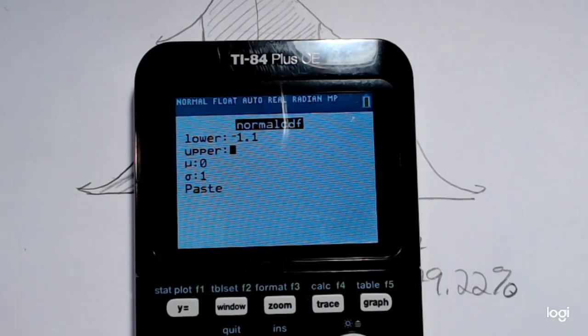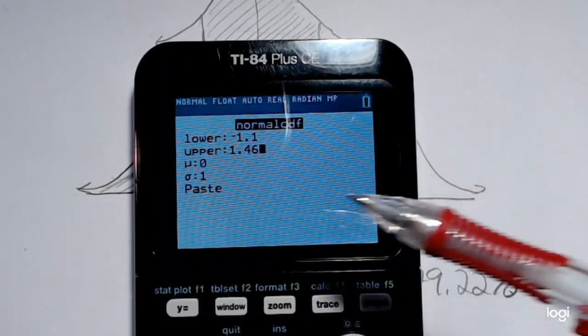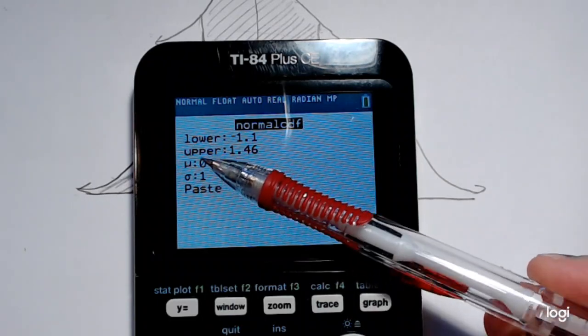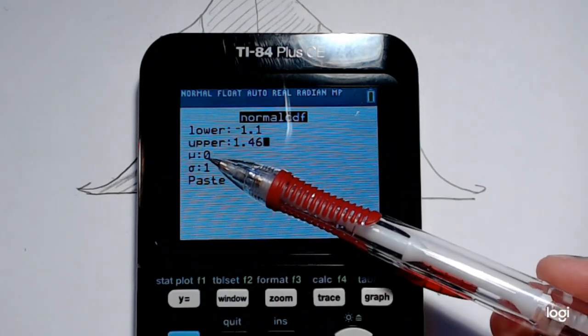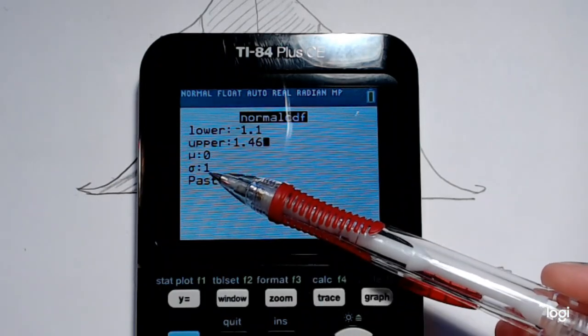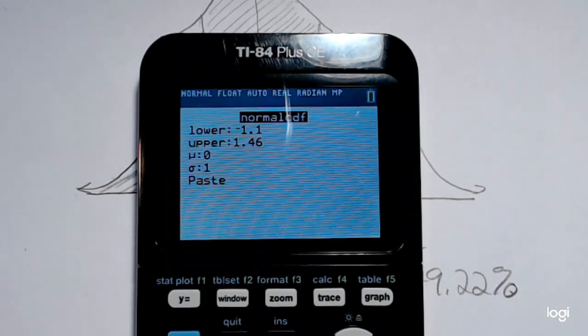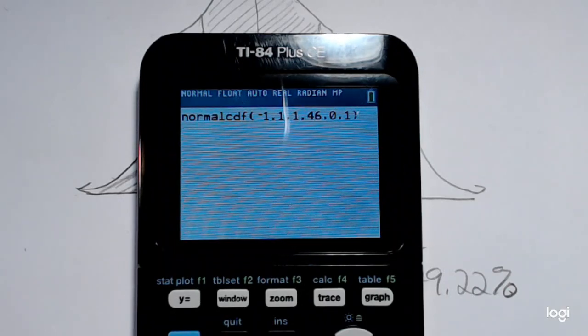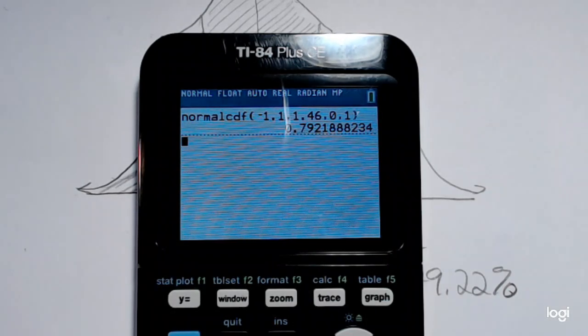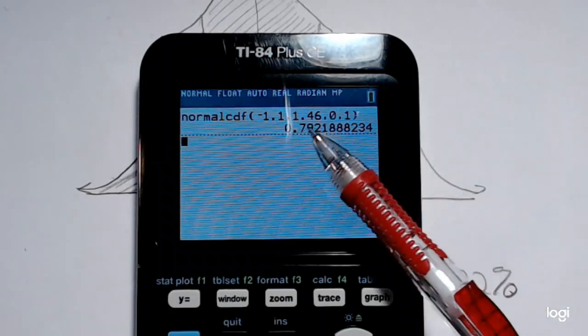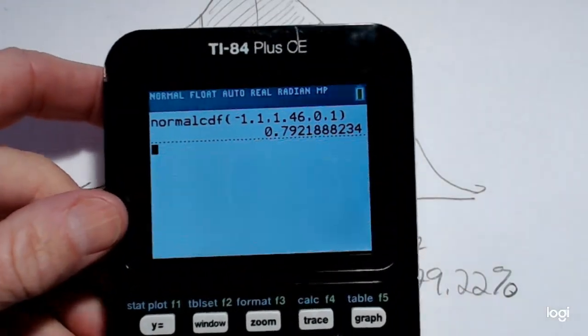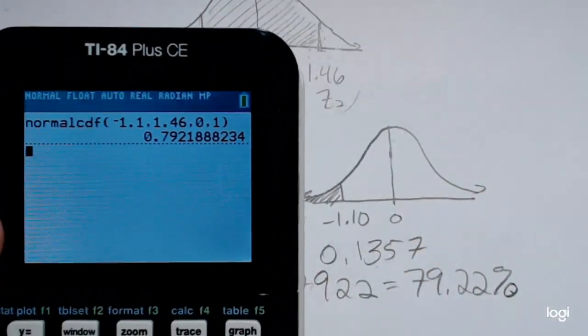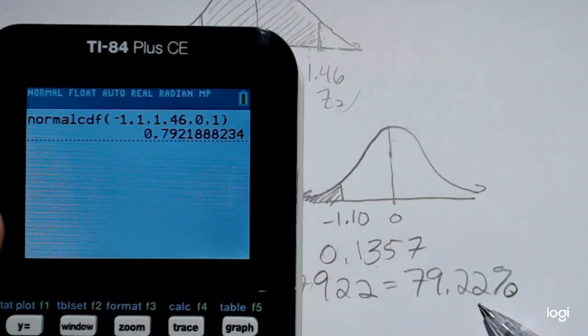And you want to leave these two numbers as is, if you're working with Z-scores or a standard normal situation. The mean is 0 and the standard deviation is 1 for the standard normal distribution. Then I'm going to arrow down, enter, and enter again. And rounding to four decimal places, you'll see that I get 0.7922, which is the same value that I got when I used the standard normal table.